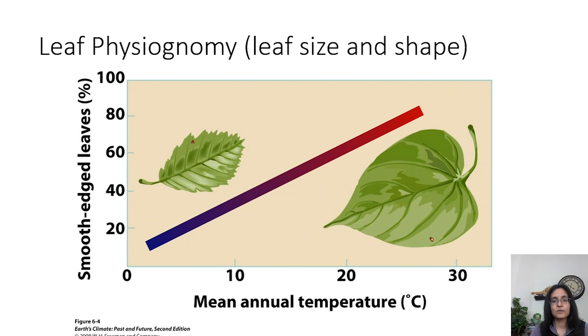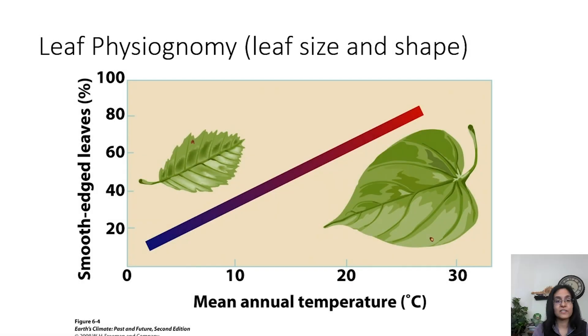One proxy is called leaf physiognomy, related to leaf size and shape. In warmer conditions, there tends to be a higher prevalence of leaves with smooth edges, whereas in cooler conditions, leaves tend to have teeth — little pointy bits along the edge. If you collect a whole bunch of leaves and find, say, 60% have smooth edges, that corresponds to approximately 20 degrees Celsius mean annual temperature. You can compare that to the environment you know to see whether it's consistent.